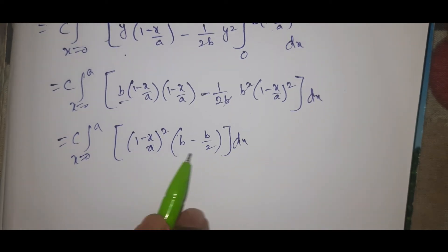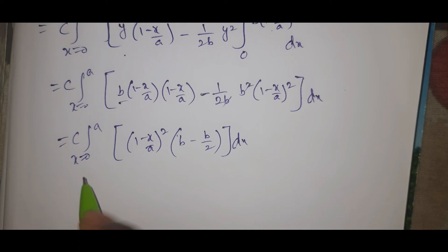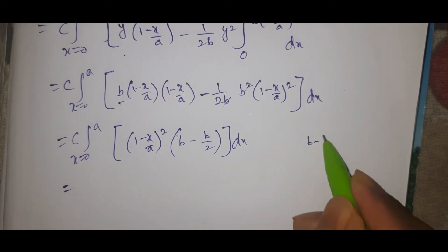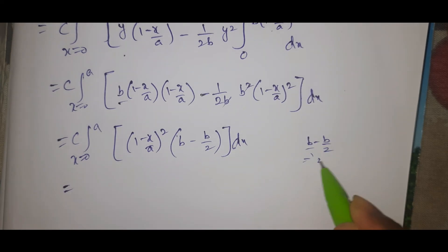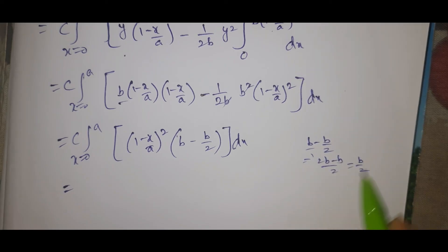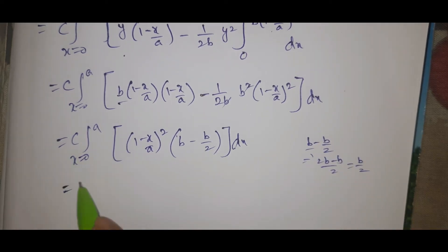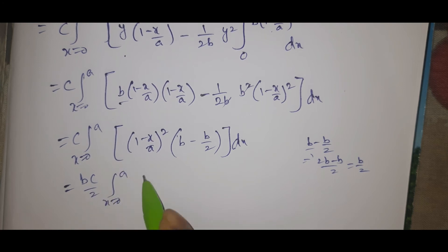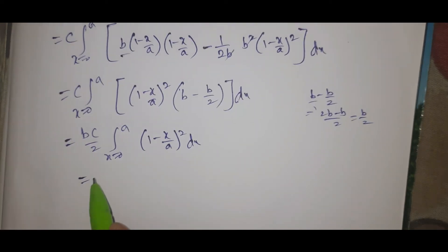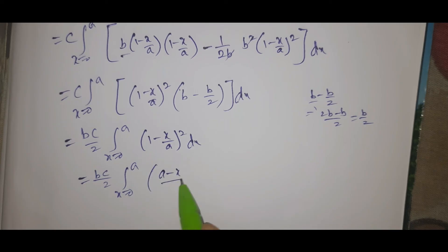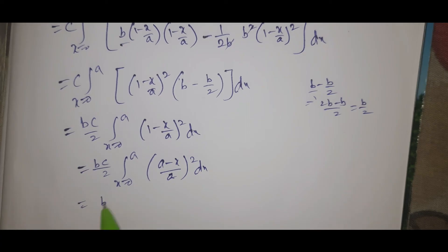Simplifying: b cancels, giving c times the integral from 0 to a of b(1 - x/a)² - (b/2)(1 - x/a)² dx. Combining terms: 2b/2 - b/2 = b/2, so the expression becomes (bc/2) times the integral from 0 to a of (1 - x/a)² dx.